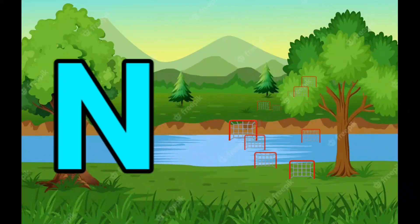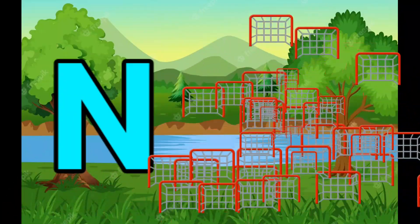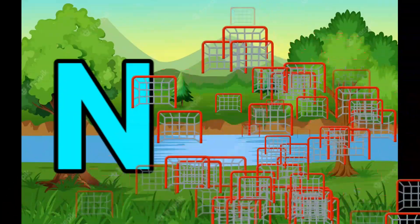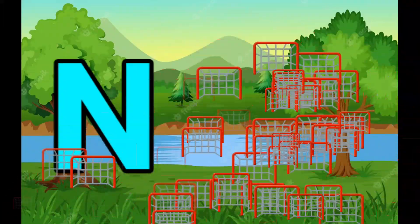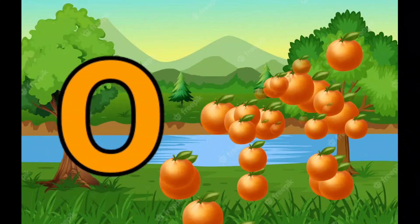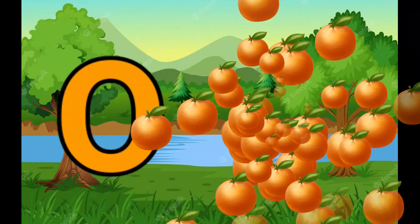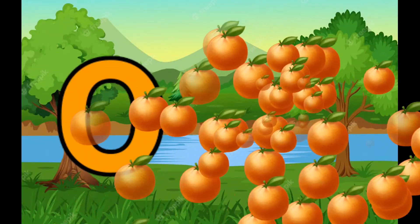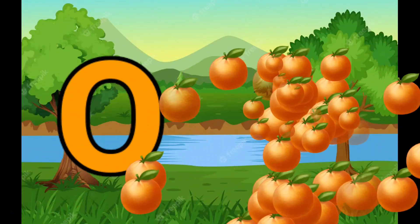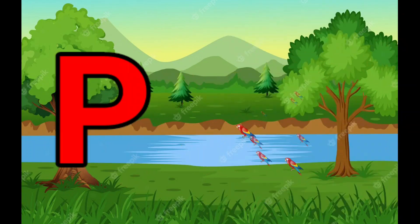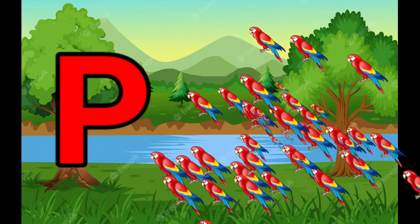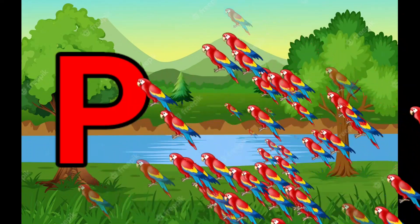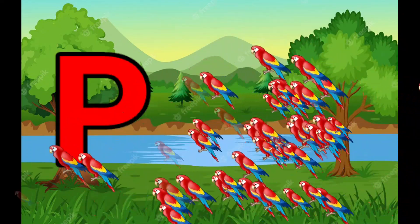N is for Net, N-N-Net. O is for Orange, O-O-Orange. P is for Pet, P-P-Pet.